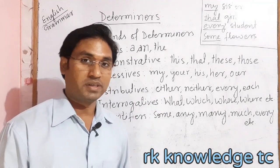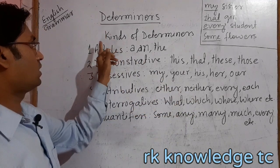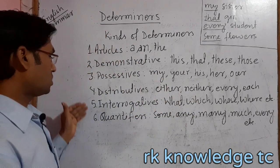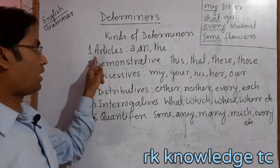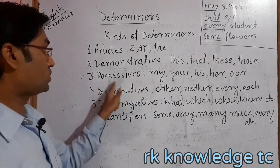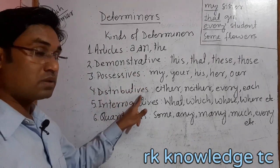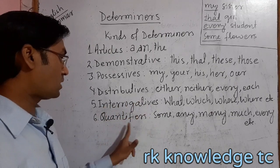How many types of determiners are there? Simply you can see that here there are six types of determiners. Articles, demonstratives, possessives, distributives, interrogatives, and quantifiers.